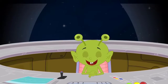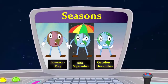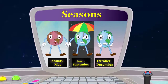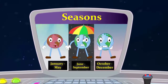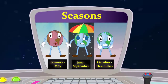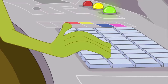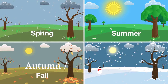We categorize these changes that occur every few months as seasons. That is, summer, winter, autumn and spring.